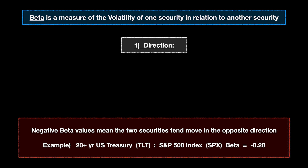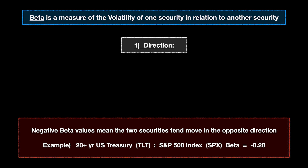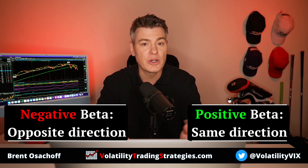Negative beta values mean the two securities move in the opposite direction. For example, the 20-year U.S. Treasury ETF called TLT has a beta factor to the S&P 500 of minus 0.28 — a negative number meaning that long term, when one security goes up the other tends to go down. When the S&P 500 goes down, treasuries tend to go up. With interest rates near all-time lows and the Fed suggesting they'll start hiking rates soon, we'll see if this still holds, but long term there is a negative beta factor between stocks and bonds.